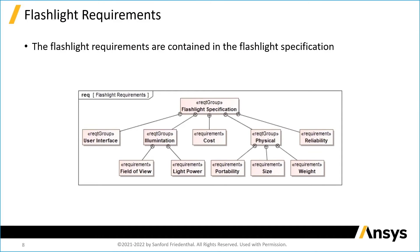What we're showing here is a simple example of the flashlight specification as a tree of requirements. You have user interface. I'd like to point you to the illumination requirement, which is composed of a field of view requirement and a light power requirement. And there are physical and cost requirements. The physical includes portability, size, and weight, reliability, capability, and others. This just illustrates the intent of bringing these requirements in.